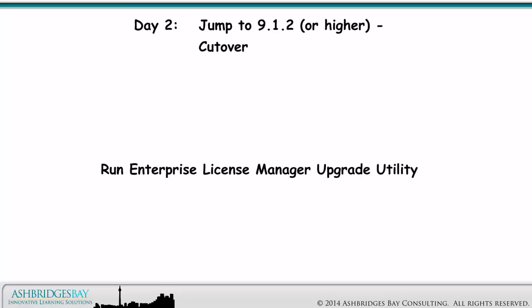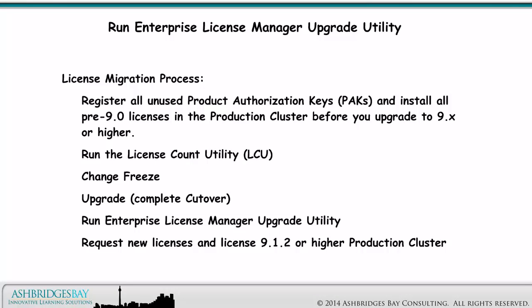Once we cut over, we'll run the Enterprise License Manager upgrade utility. The license migration process has these basic steps: Register all unused product authorization keys (PAKs) and install all pre-9.0 licenses in the Production Cluster before you upgrade to 9.x or higher. Run the License Count Utility (LCU), Change Freeze, Upgrade, Complete Cutover, Run Enterprise License Manager upgrade utility, and Request New Licenses and License 9.1.2 or Higher Production Cluster.